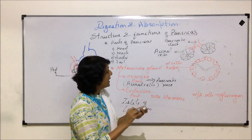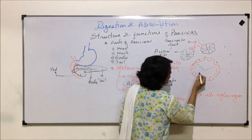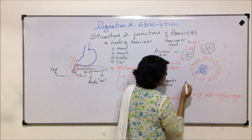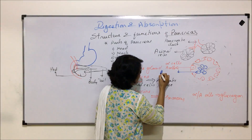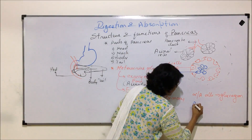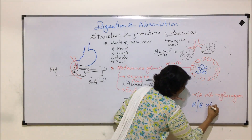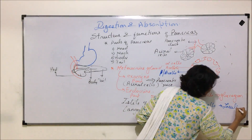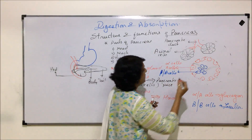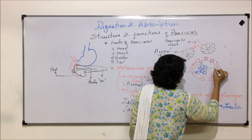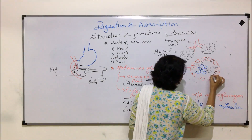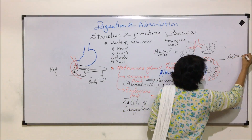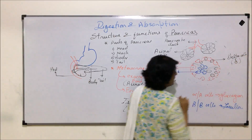The second category of cells are slightly on the inner side. These cells are known as beta cells, or B cells. Beta cells produce insulin. The third category of cells are found in between the alpha cells as well as in the middle. These cells are known as delta cells, or D cells.